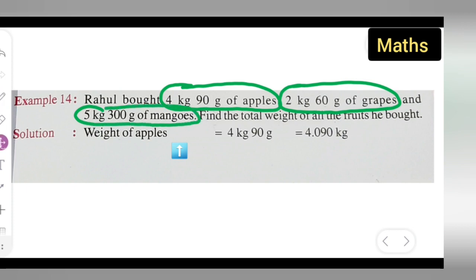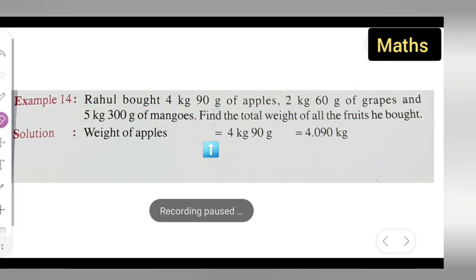We need to find the total weight of the fruits he bought. The weight of the apples is given. Let me write this. Here, the weight of the apples is given to be 4 kg 90 grams.